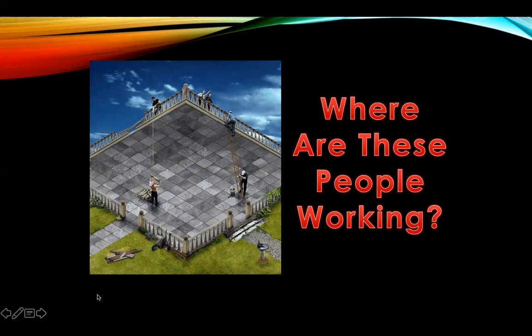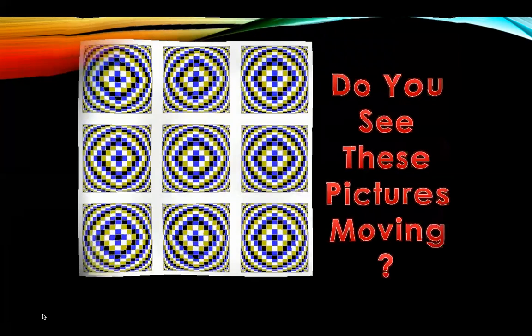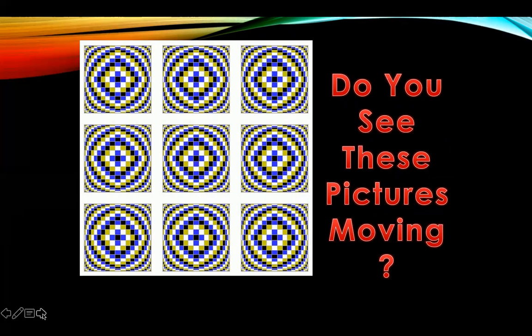Once again, this is kind of a trick question. It's an illusion because you can see different perspectives. They could be working on the ground, or they could be working on the roof — it's all in the way that you look at it. Do you see these pictures moving? Obviously, they're not. But once again, the shape, the color, the size of the squares can give the illusion that they're actually growing out at you.